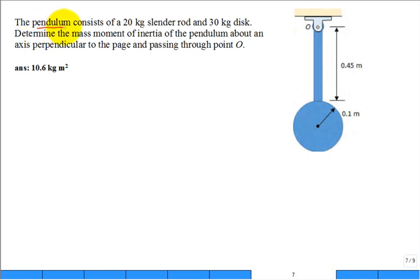We have a pendulum. It consists of a 20 kilogram slender rod. So this part right here has a mass of 20 kilograms and a 30 kilogram disc. So it's down here. That's our disc.